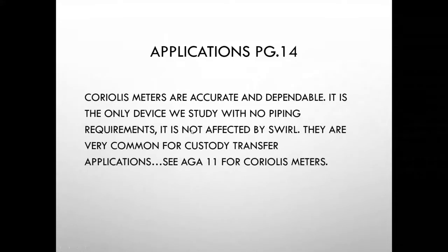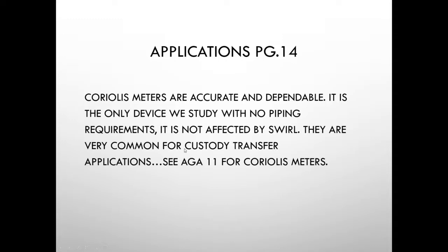Applications for Coriolis meters: they are accurate, dependable, and the only device we are studying that has no piping requirements — no upstream or downstream piping requirements. It basically acts as its own flow conditioner and is not affected by swirl or turbulence. They are very common for custody transfer applications. The American Gas Association guideline AGA11 speaks to the requirements for using Coriolis meters in custody transfer applications — AGA11 is specific to Coriolis meters.